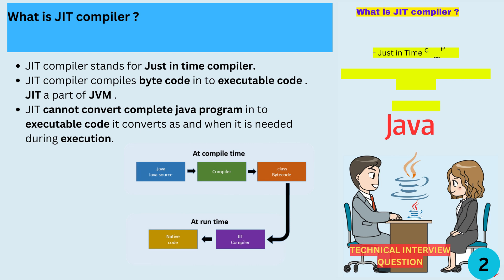That's a great explanation. It sounds like the Java Virtual Machine is a crucial part of making Java platform independent. Now let's talk about the JIT compiler. JIT stands for Just-In-Time Compiler. The JIT compiler is part of the JVM and it's responsible for converting the bytecode into executable code at runtime. It does this when the program is being executed rather than before the program is run.